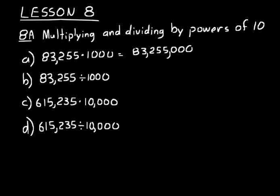Now if we divide by 1,000, we're basically moving the decimal place to the left. And so now we would have 83, for practice problem B, we'd have 83.255. That would be our answer for B.